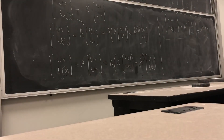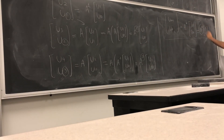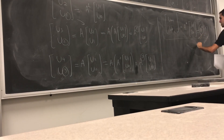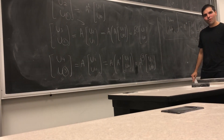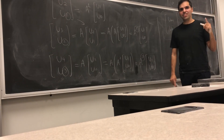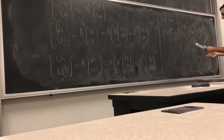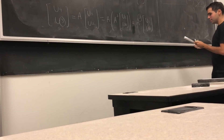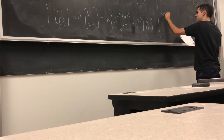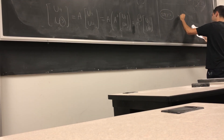Because [u_{n+1}, u_n] = A^n times that vector, it would be nice to figure out what A to the nth power is. In general, if you want to figure out powers of matrices, it's very useful to diagonalize. So let's diagonalize — that's step two.